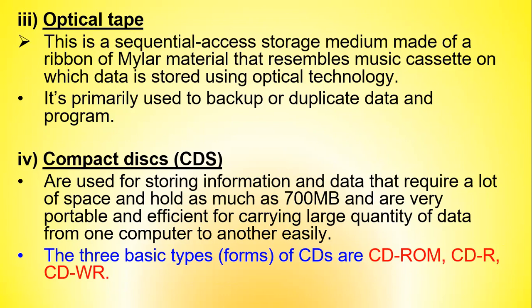Compact disks or CDs are used for storing information and data that require a lot of space, holding as much as 700 MB, and they are very portable and efficient for carrying large quantities of data from one computer to another. The three basic types of CDs are: CD-ROM, CD-R, and CD-RW.